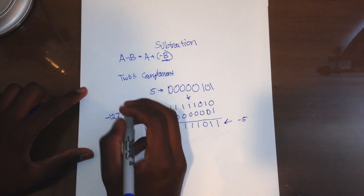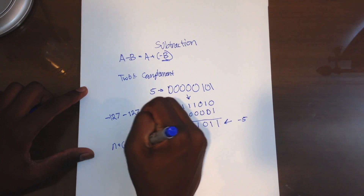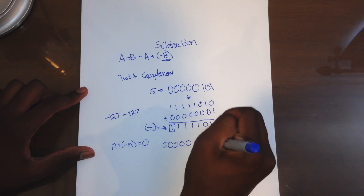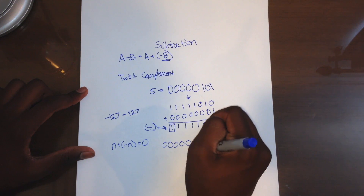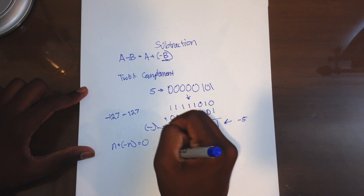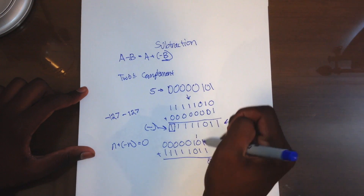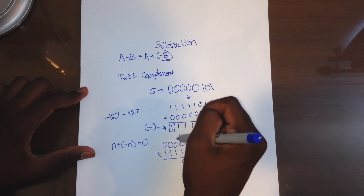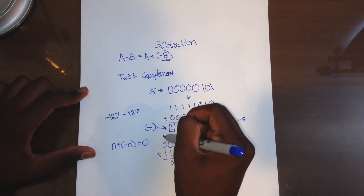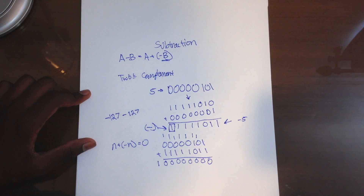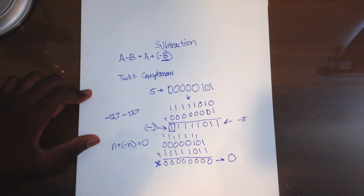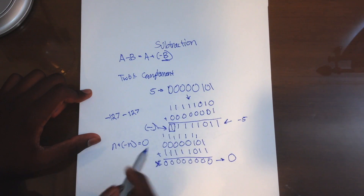Let's verify: a number N plus its negative number should equal 0. Take the number 5 — 0, 0, 0, 0, 0, 1, 0, 1 — and add its negative form to it. We get: 1 plus 1 is 0 carry the 1, 1 plus 1 is 0 carry the 1, 1 plus 1 is 0 carry the 1, and so on. This produces 9 digits, but the computer only uses bytes, so it does not count this 9th digit. The result is actually 0. That is how binary subtraction works.